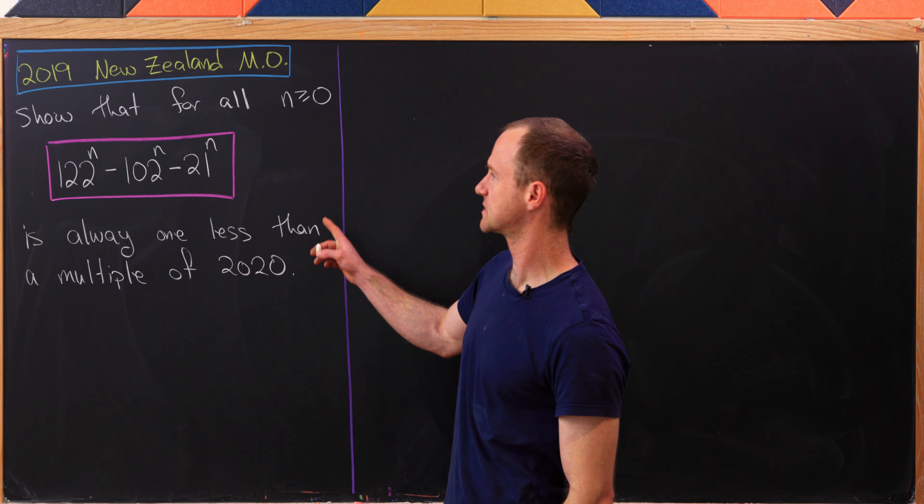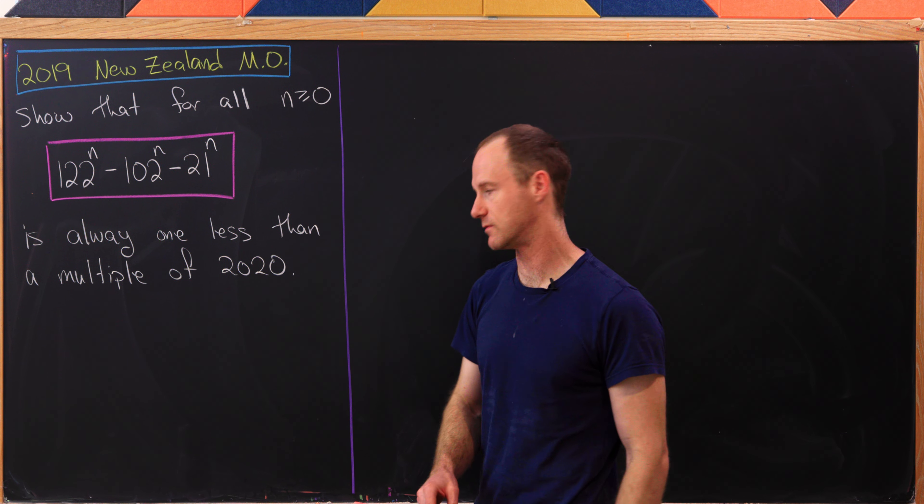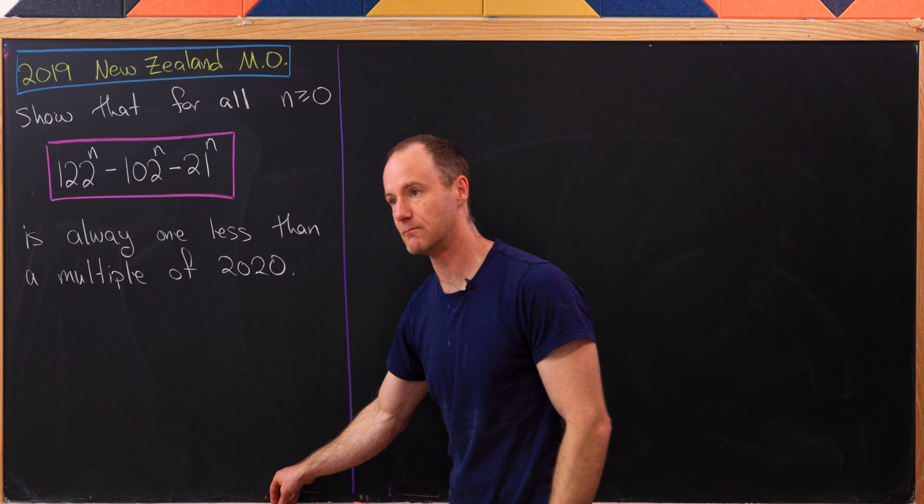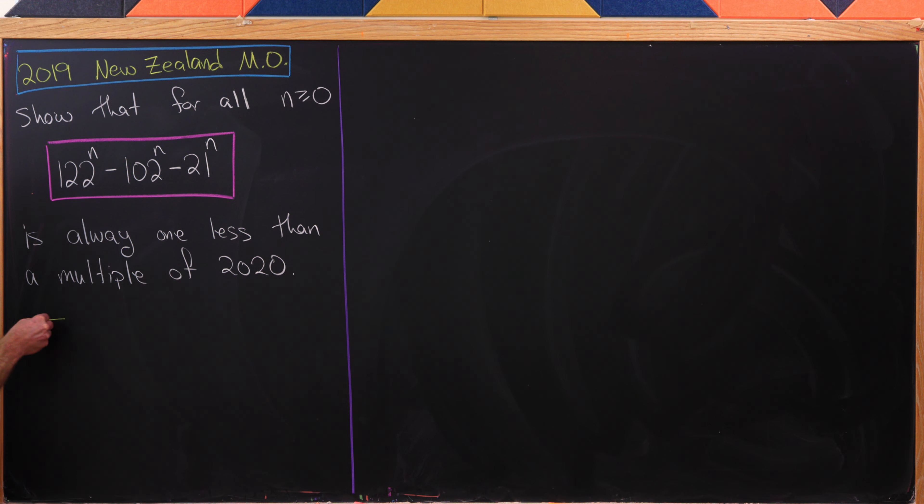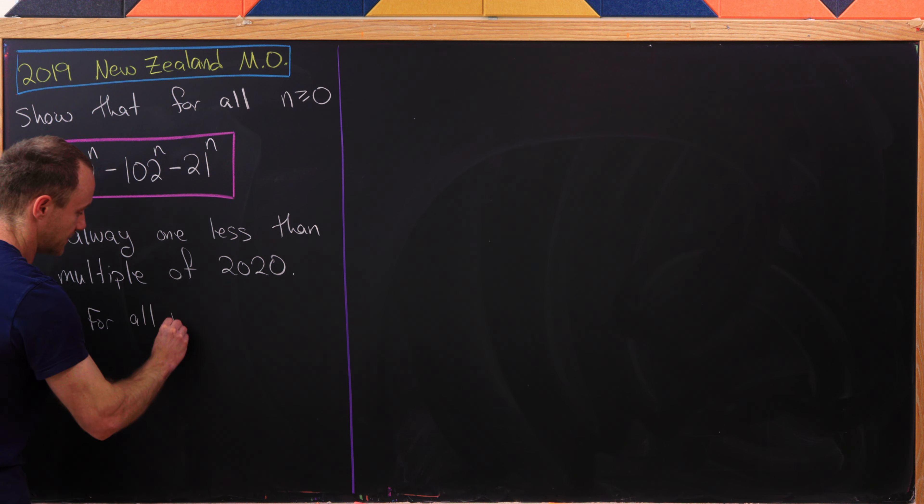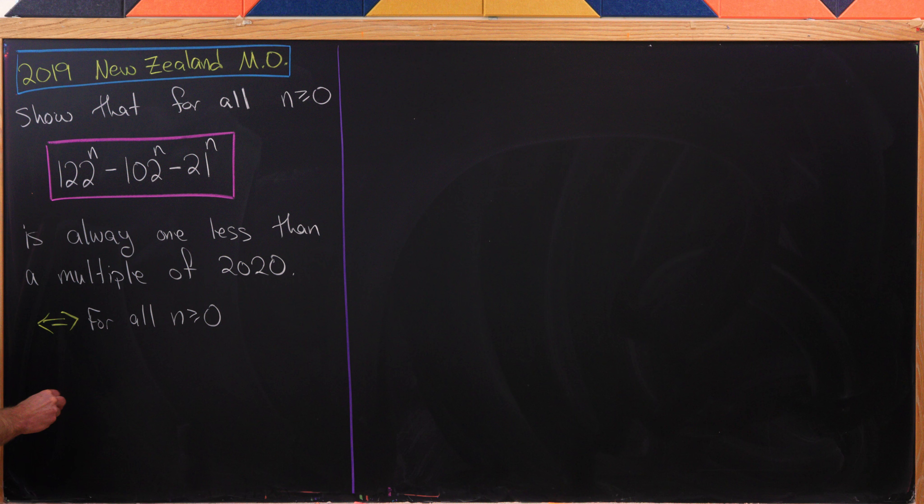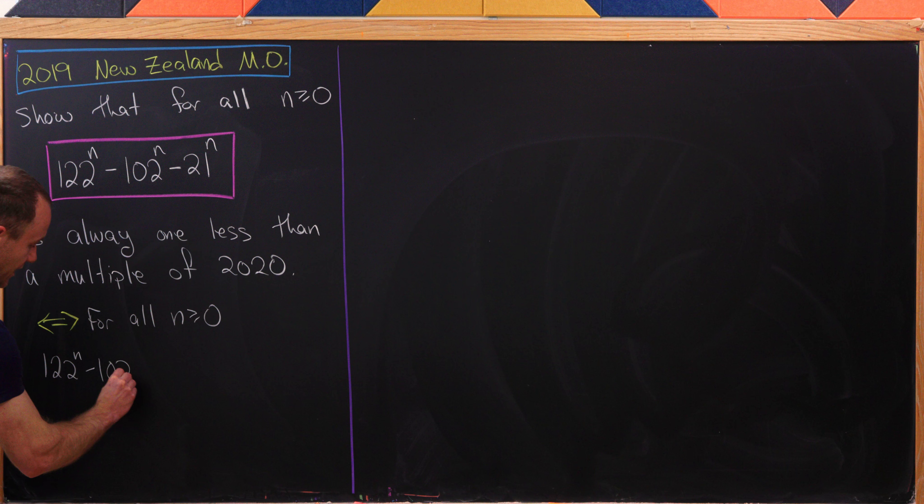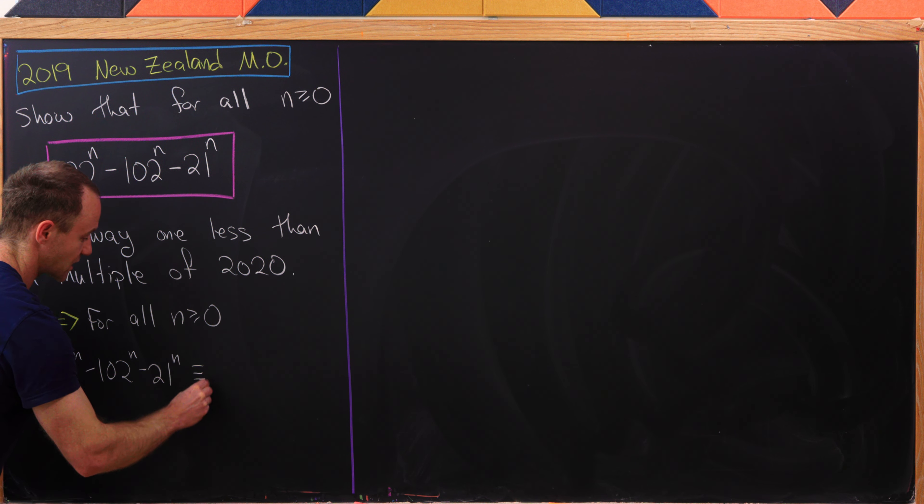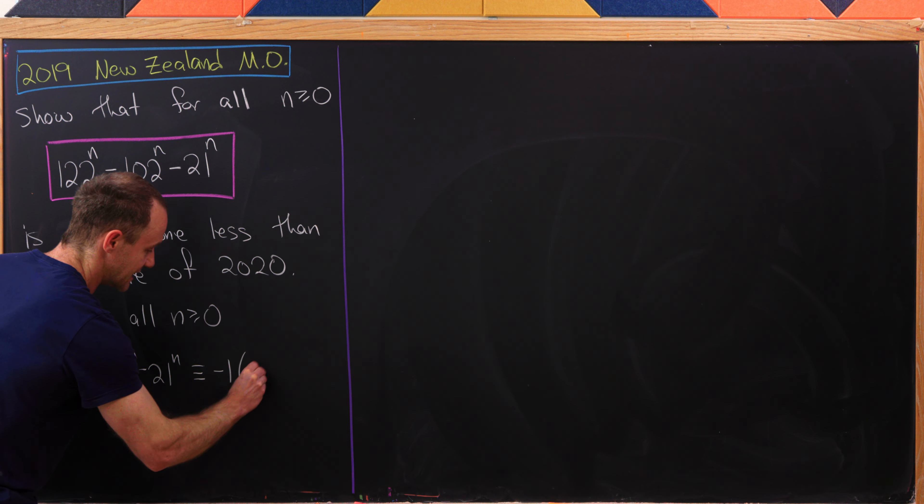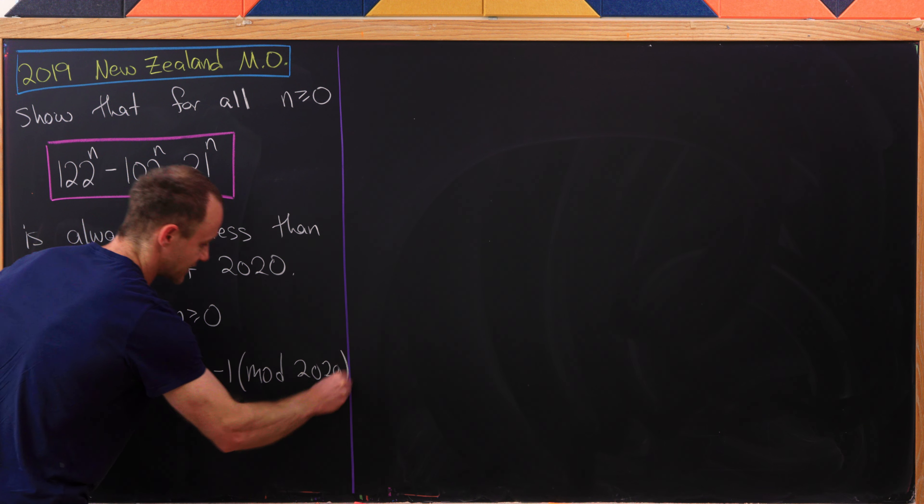So what I'd like to do first is to recast this problem in terms of that modular arithmetic or that congruence mod n. So what I'll just say is that this is equivalent to showing for all n which are bigger than or equal to 0, we have 122^n - 102^n - 21^n is congruent to negative 1 mod 2020.